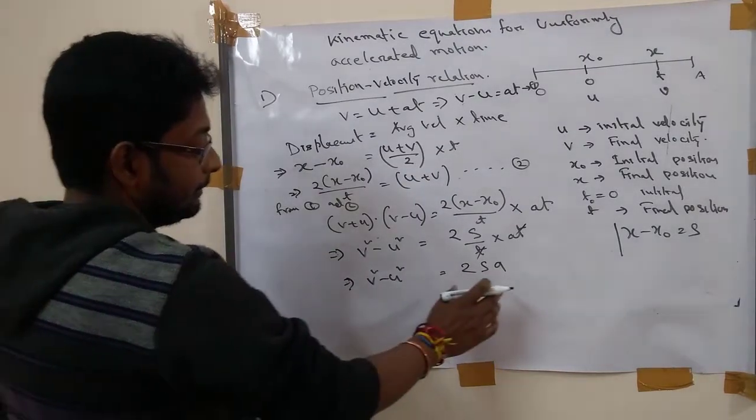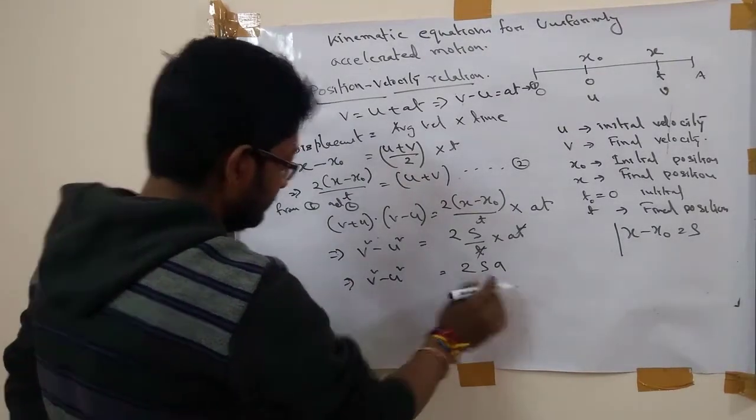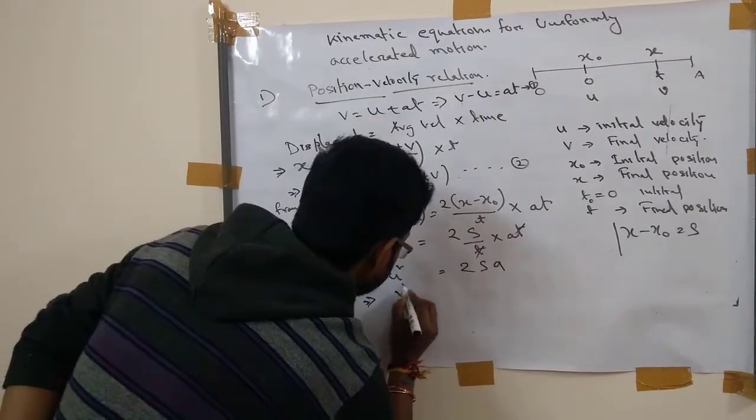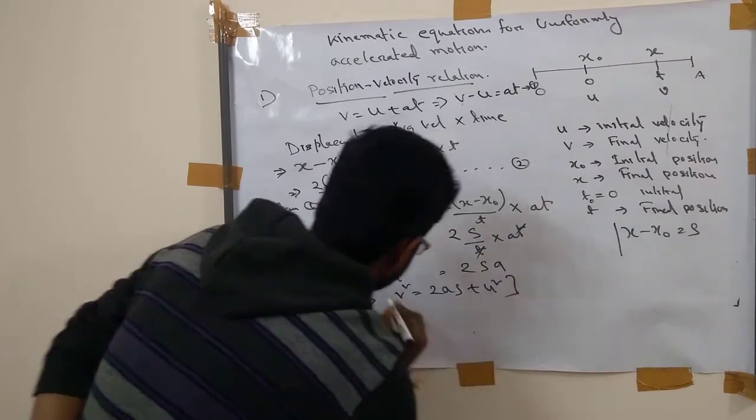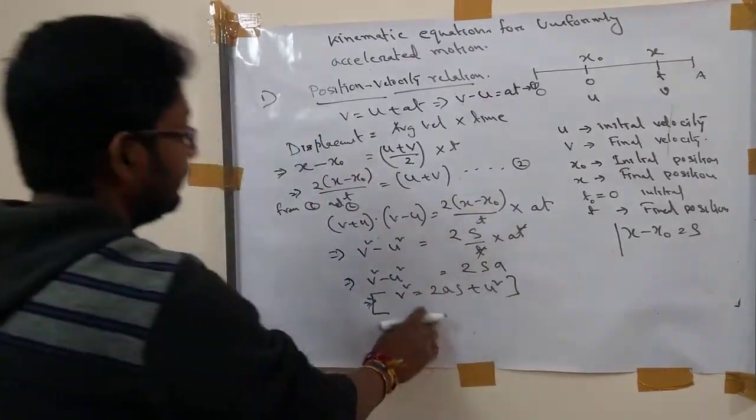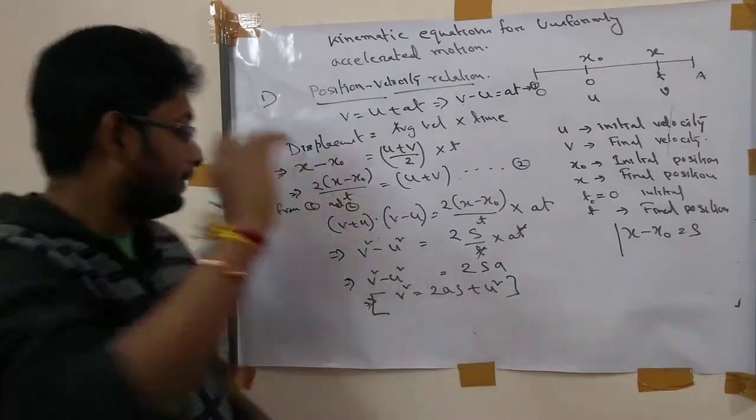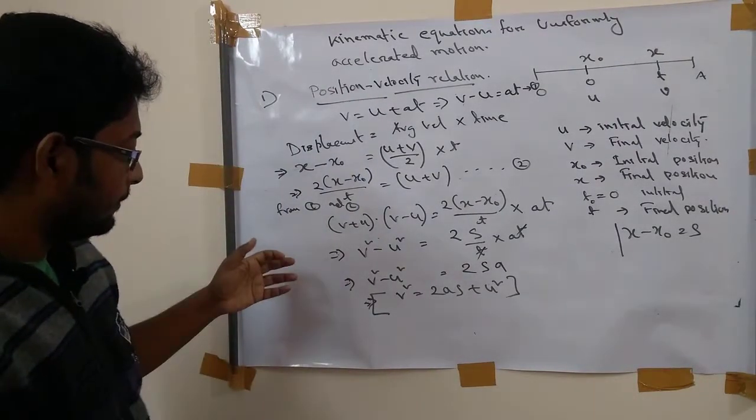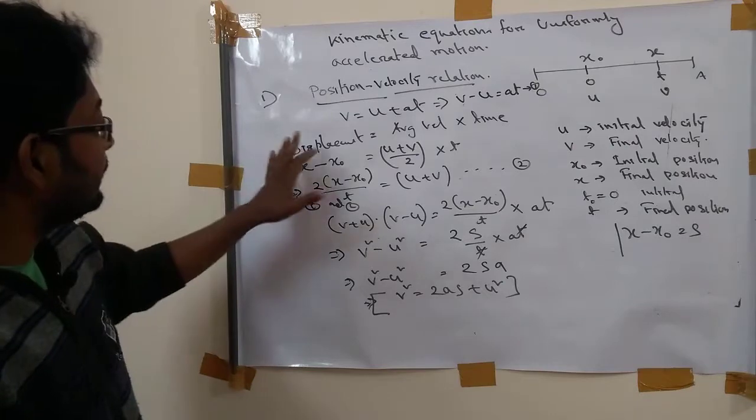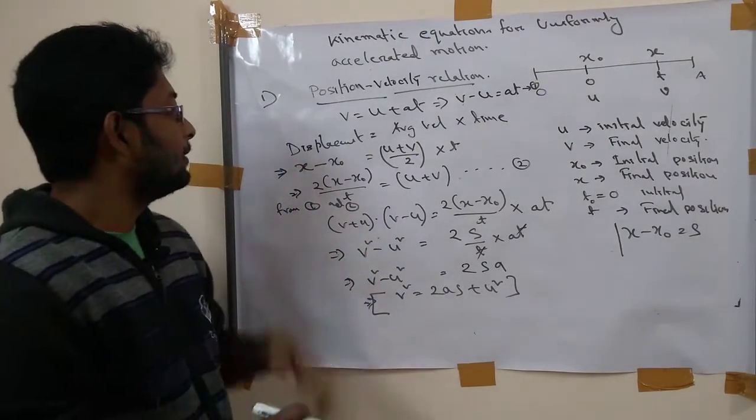Therefore, v square equal to 2as plus u square. This is the formula for position velocity relationship. I think you understood how I derive this relationship.